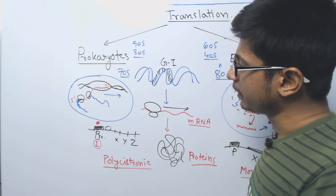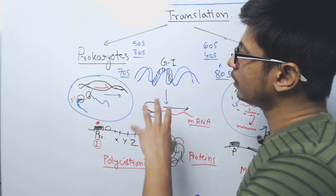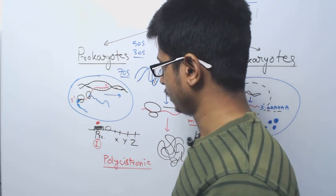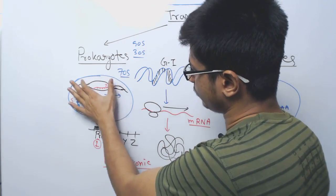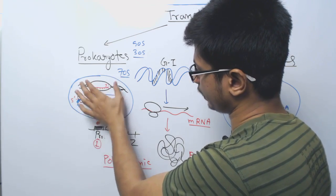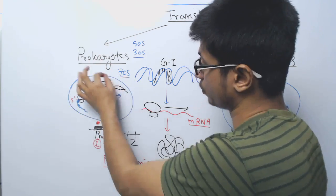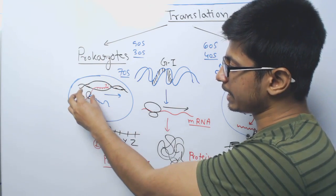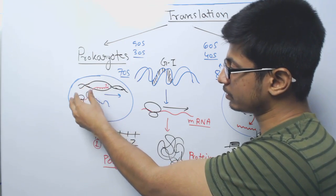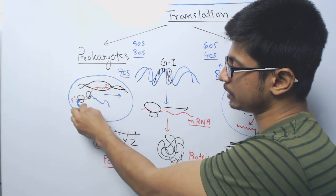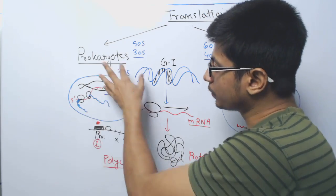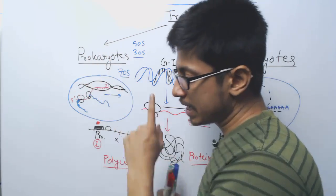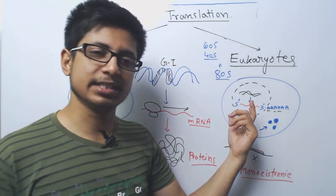The second difference is the process of translation is coupled with transcription in case of prokaryotes. Let's say here, this black thing is the DNA, double-stranded DNA and red is the mRNA which is being produced, transcription is going on. While transcription is going on, ribosomes can attach to the newly forming mRNA and translate that into polypeptide which are blue color here. The process of transcription and translation occurs simultaneously in prokaryotes.